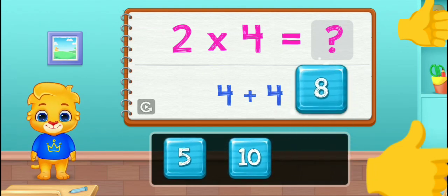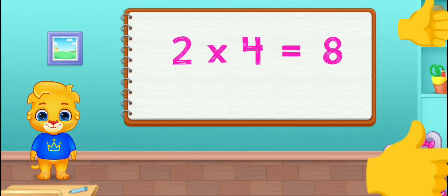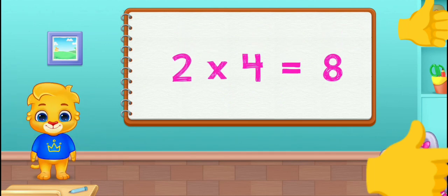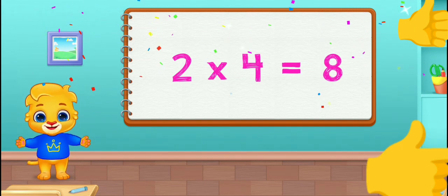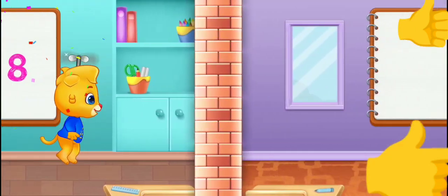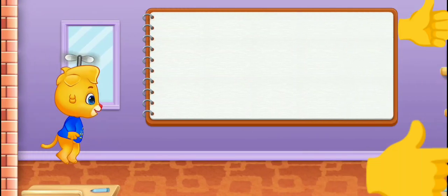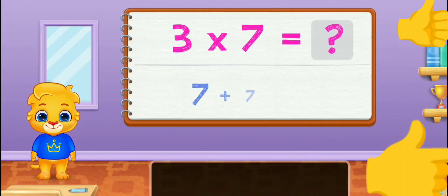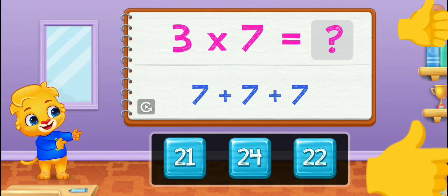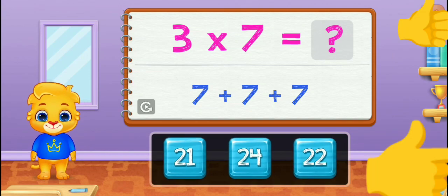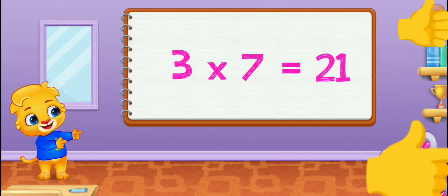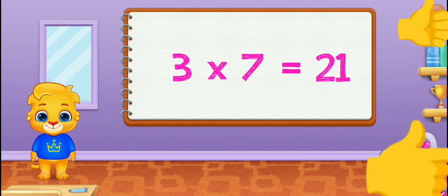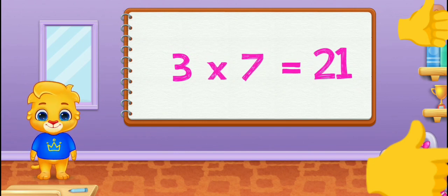8. Woohoo! 2 times 4 equals 8. 3 times 8... 3 times 7 equals 21.